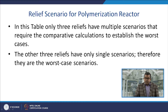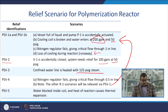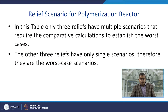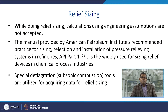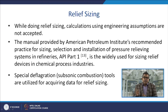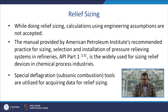In this relief scenario table, only three reliefs have multiple scenarios requiring comparative calculations to establish the worst case, while the other three reliefs have only a single scenario and are therefore also the worst case. Engineering assumptions alone are not accepted for relief sizing calculations. The API Recommended Practice for sizing, selection, and installation of pressure relieving systems is widely used in chemical process industries.